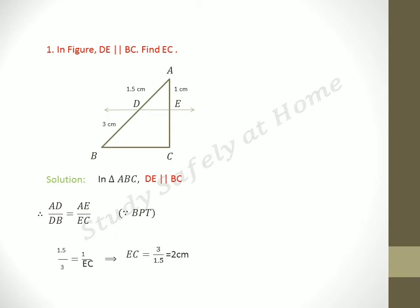That means EC is equal to, we have to cross multiply here, 3 into 1 by 1.5 which is equal to 2 cm. Very easy problem, it can be asked for one more question also.